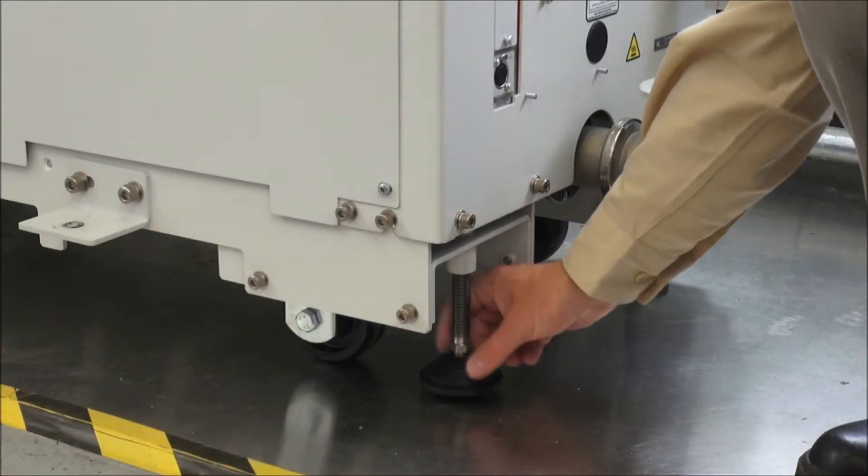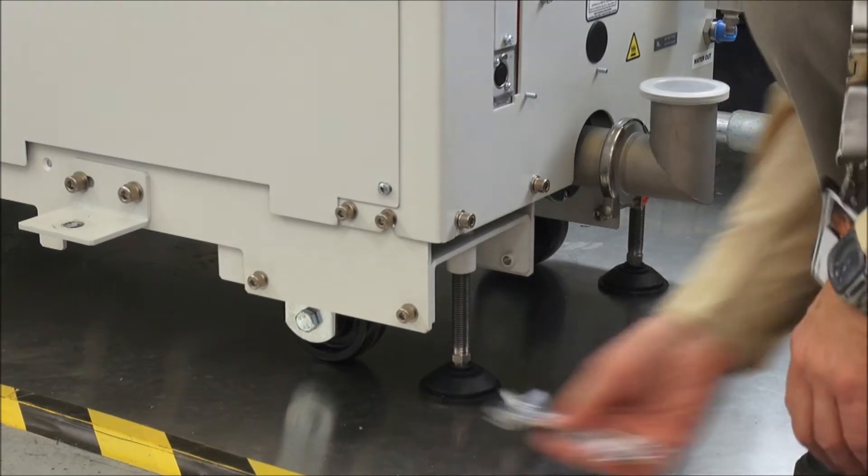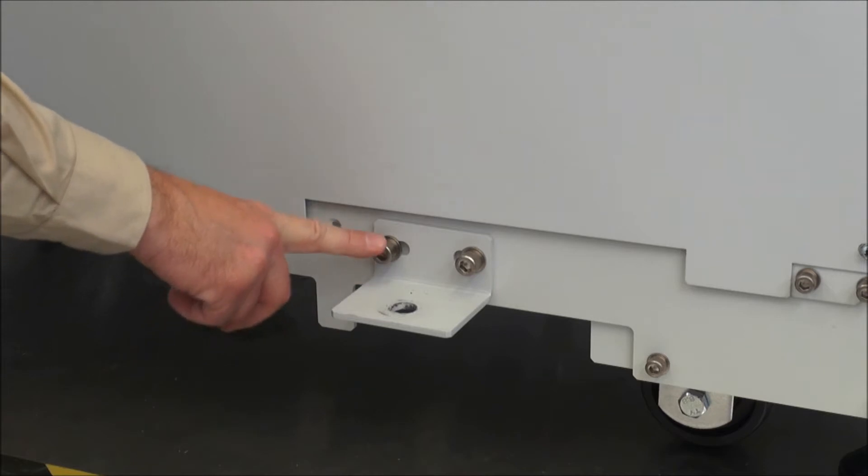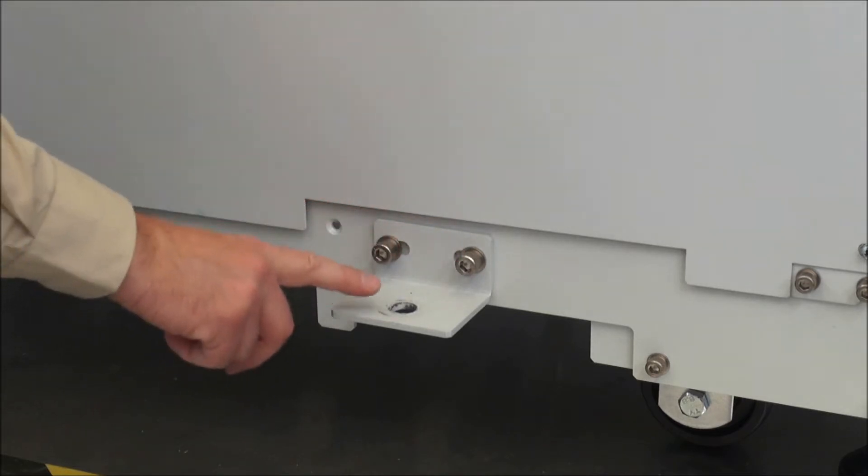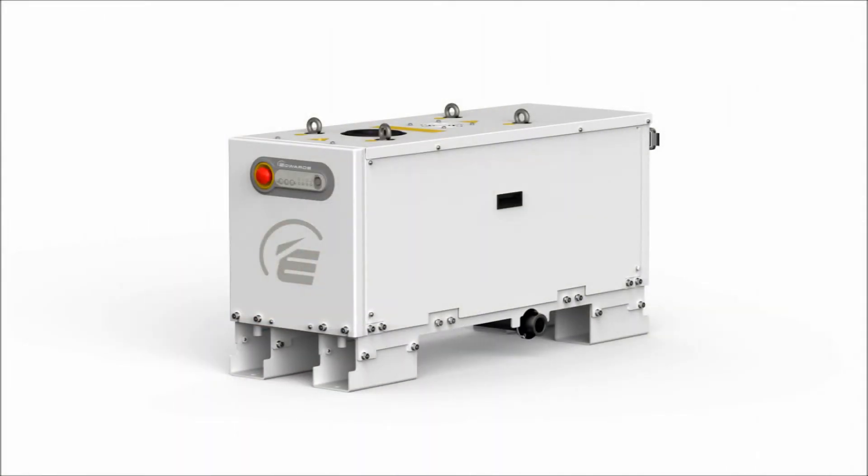Secure the GXS in its position. For rear exhaust models with wheels or casters, drop the feet to the floor and then firmly jack the pump up on them. The seismic brackets on the sides of the rear exhaust caster models can be removed by undoing the screws or they can be used to clamp the pump to suitable restraints. Side exhaust models can be bolted through into the floor or onto suitable framing.